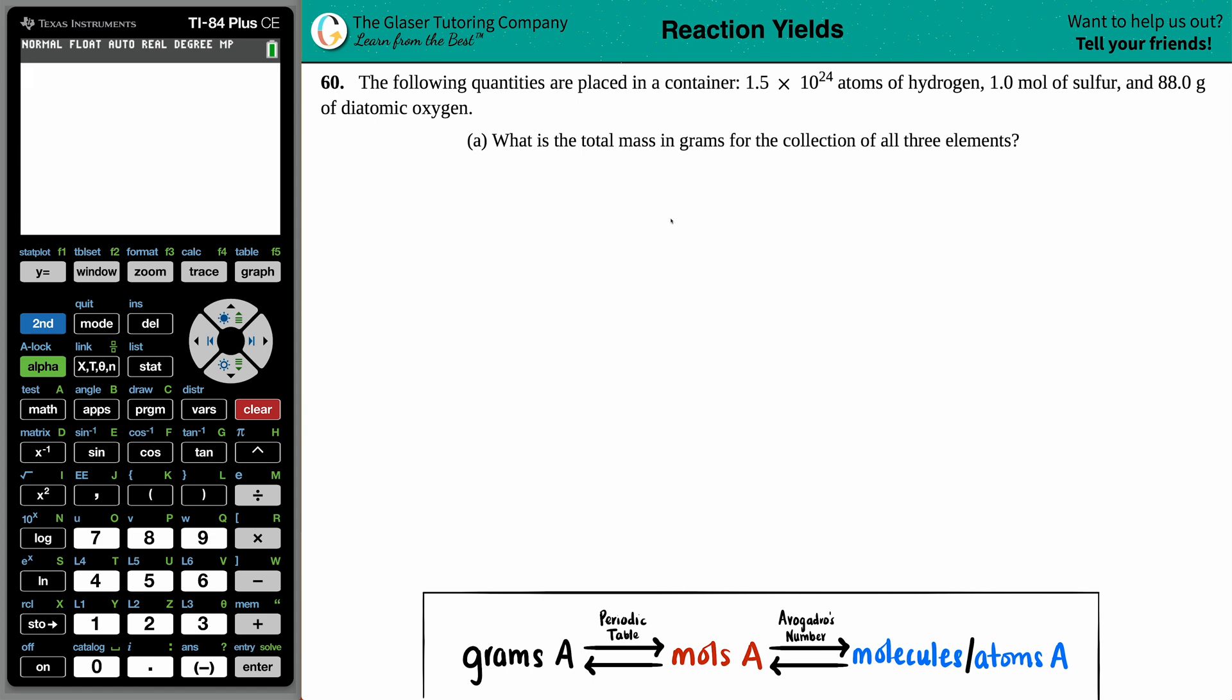Number 60. The following quantities are placed in a container. We have 1.5 times 10 to the 24th atoms of hydrogen, then we have 1.0 mole of sulfur, and then we have 88.0 grams of diatomic oxygen. Letter A. What is the total mass in grams for the collection of all three elements?